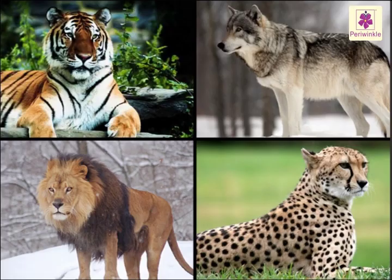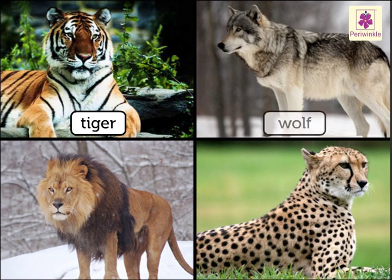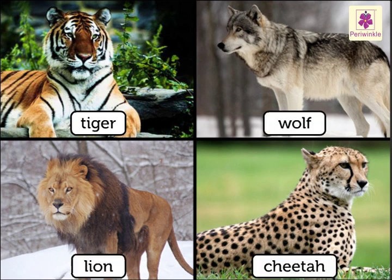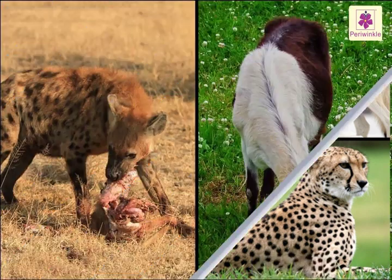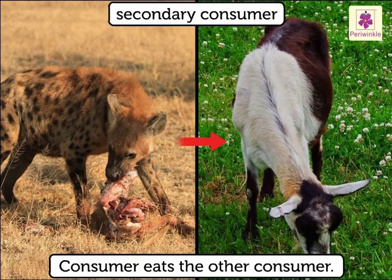The carnivores, or secondary consumers — like the tiger, wolf, cheetah, and lion — depend on animals for their food. Here the consumer eats other consumers.